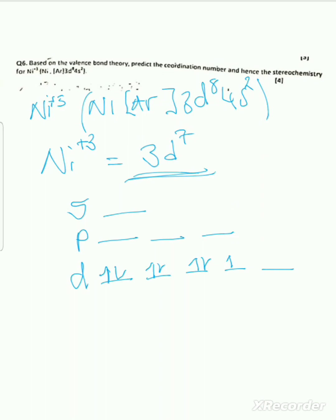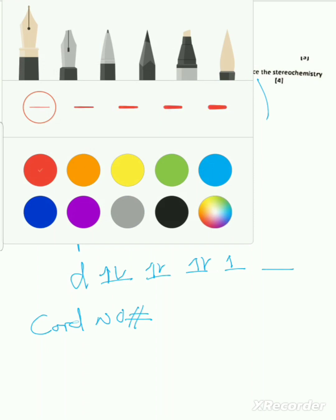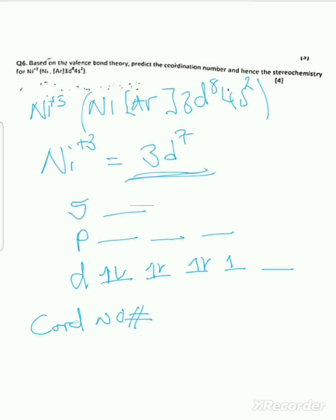We have seven electrons on the d orbital. To find the coordination number, the simplest way is to count the number of empty orbitals. Counting the empty orbitals: one, two, three, four, five — so the coordination number is five.